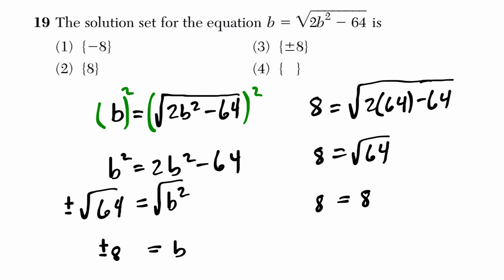But if you plug in negative 8, put a negative sign here, you can see that this would never work out. Because if you square, these are not equal. If you square negative 8 here, you get 64. So the right-hand side, you're going to get 64 again. But on the left-hand side, you have negative 8.